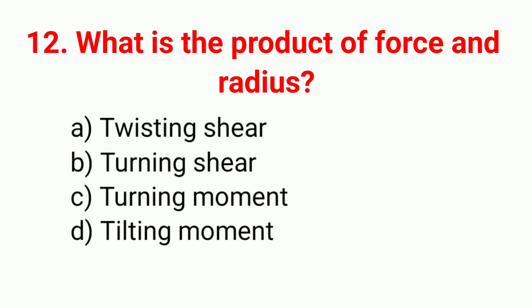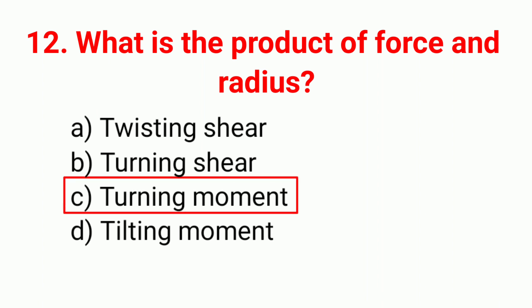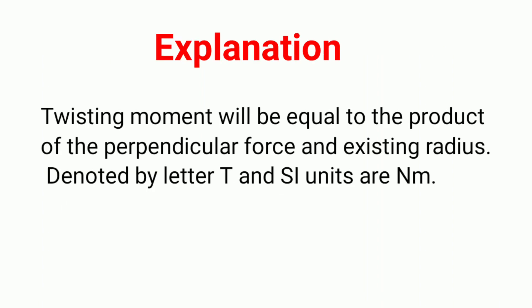Question 12: What is the product of force and radius? Your right answer is option C, turning moment. Explanation: the twisting moment is equal to the product of the perpendicular force and the existing radius of the perpendicular force. That concludes this video.